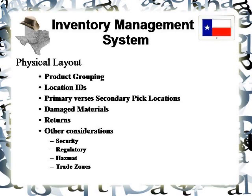Moving on to location IDs — the way you set up the number structure and the logic of your numbering on a location ID determines how the queries you write for either the letdown process or your picking process, such as z-path picking, will be affected. This in turn will impact your data table structure.